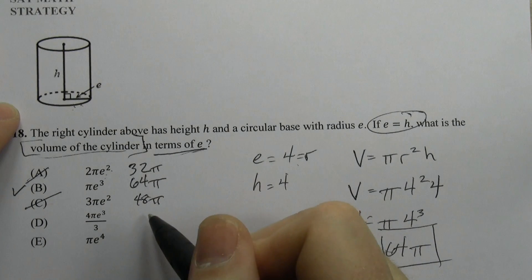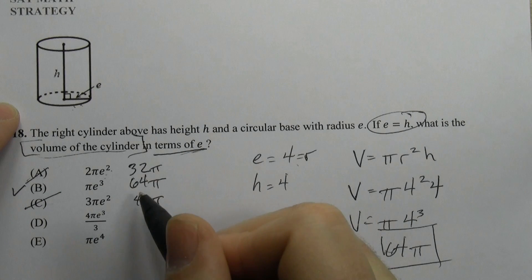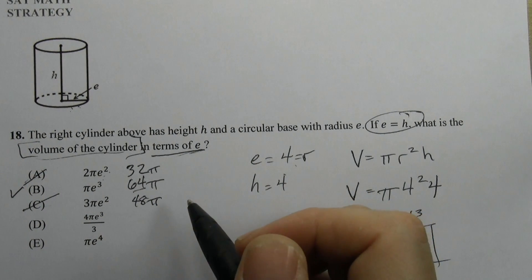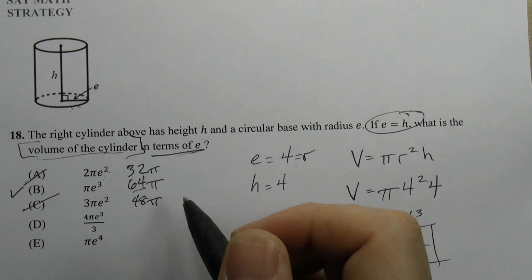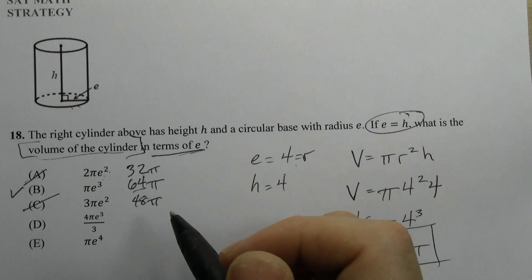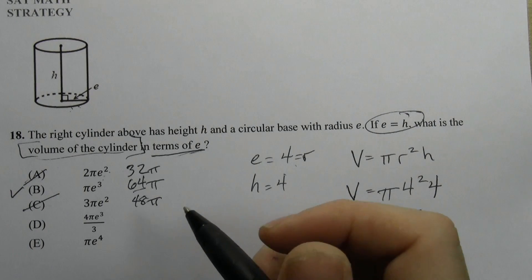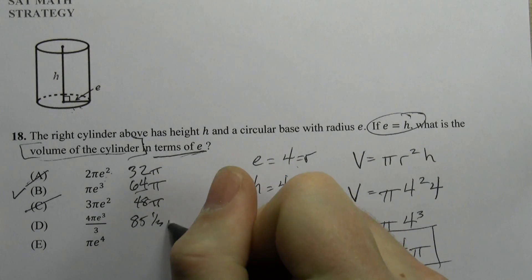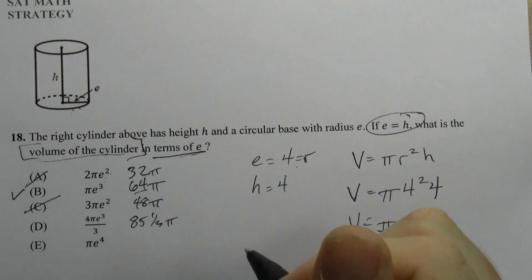4/3 π r³. Okay, well, 64 divided by 3 times 4. That's 85 and a third π. That's not going to be good.